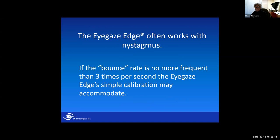The system often works with nystagmus. If the nystagmatic rate — the bounce rate of the eye — is not more than about three times per second, our simple calibration may and often does accommodate. The simple calibration only requires you to fix your gaze on a point for about a quarter of a second, so if your eye is bouncing less frequently than that, the fixation between bounces is sufficient for the system to capture that information and come up with a good calibration. The downside is someone with nystagmus will need a faster dwell time so they can stay in a key long enough to trigger it. But it is doable — there are users with pretty significant nystagmus on our system.